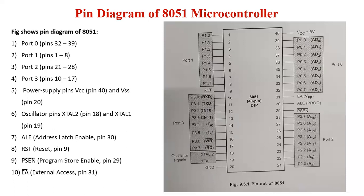Next are the oscillator pins XTAL2 and XTAL1, which are pin number 18 and pin number 19. These are the oscillator signals. For generating an internal clock signal, an external oscillator is connected at these two pins.